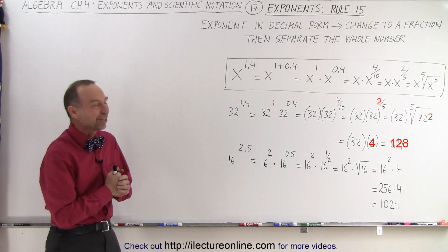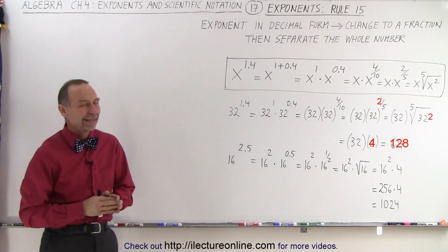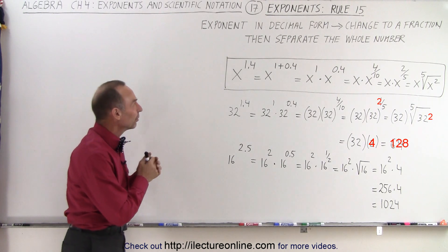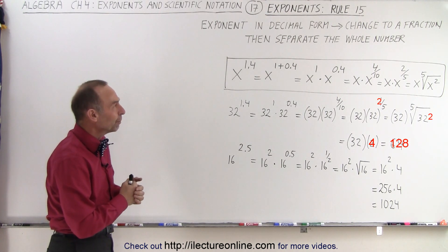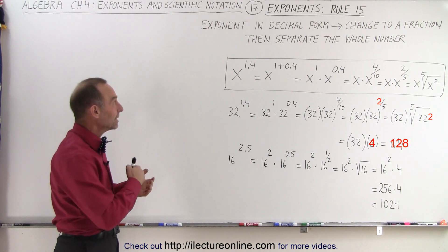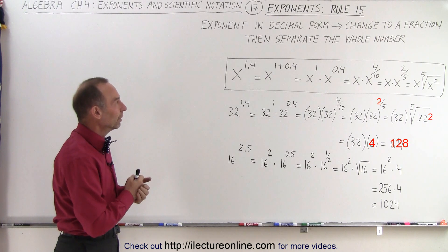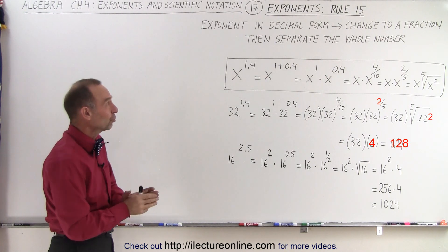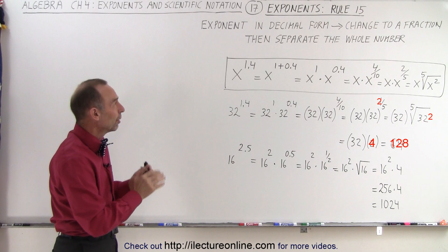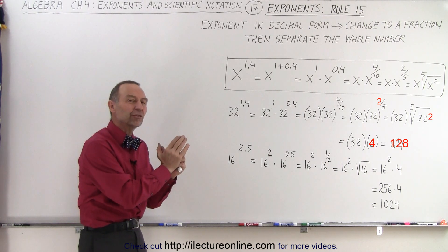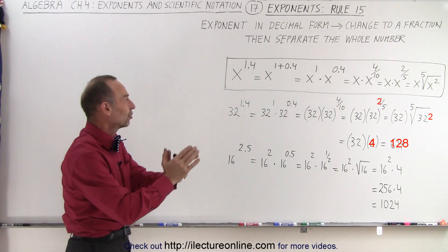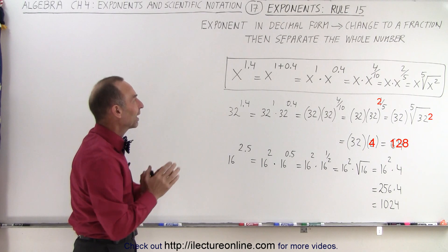Welcome to Electron Line. Here's rule number 15. It's still exponents in decimal form, but in this case the decimal is larger than 1. We use the same approach, we change it to a fraction, but then we separate the whole number in the exponent from the fractional number or from the number that's less than 1.